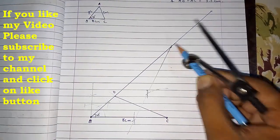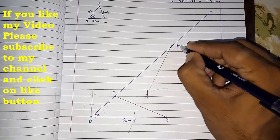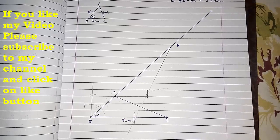Now construct the perpendicular bisector. Where this perpendicular bisector intersects on this ray, that point will be point A. This point is point A. Now just join A and C.